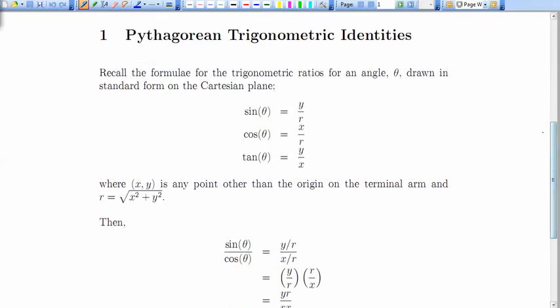First of all, I just want to remind you of the basic definition of the trigonometric ratios when we think of angles being in standard position and drawn in the Cartesian plane. We've got our three formulas for the sine, cosine, and tangent ratios, and we can actually use these to figure out some new laws, some new truths about trigonometric ratios.